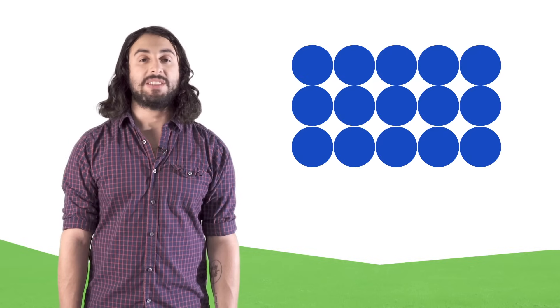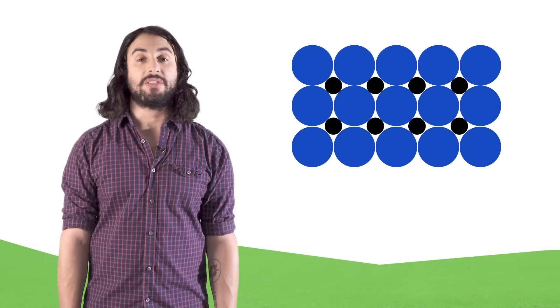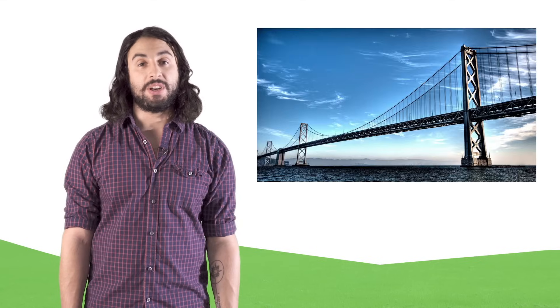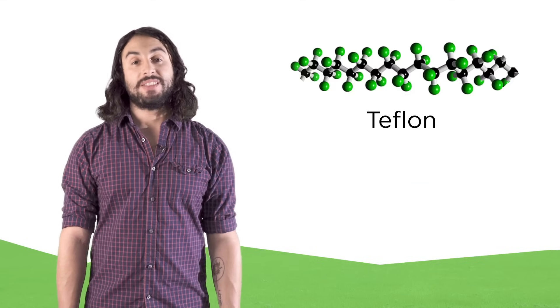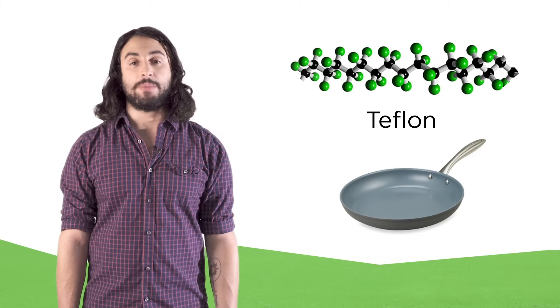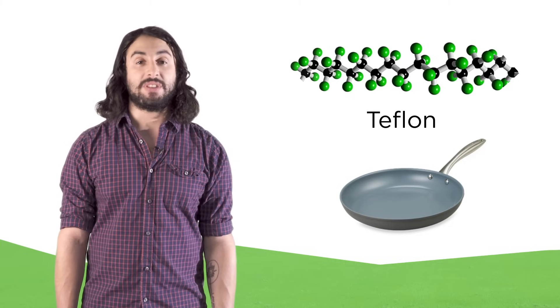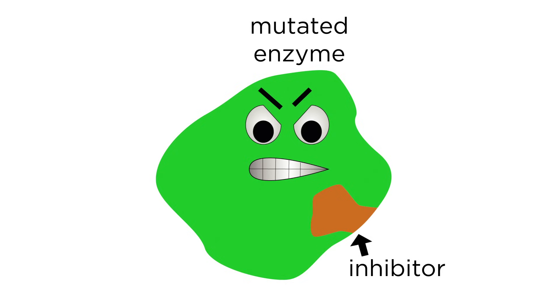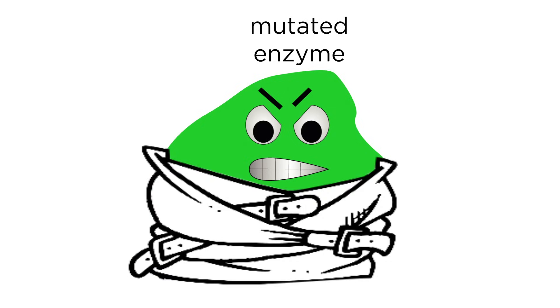Putting carbons in the empty spots of an iron lattice makes it stronger. We call this steel, which is used in most of the large structures we know today. Teflon, a carbon-fluorine polymer, is a nonstick substance that's highly resistant to chemical degradation. And carbon-based synthetic drugs like inhibitors that can silence a faulty enzyme hold the prospect of curing so many diseases.